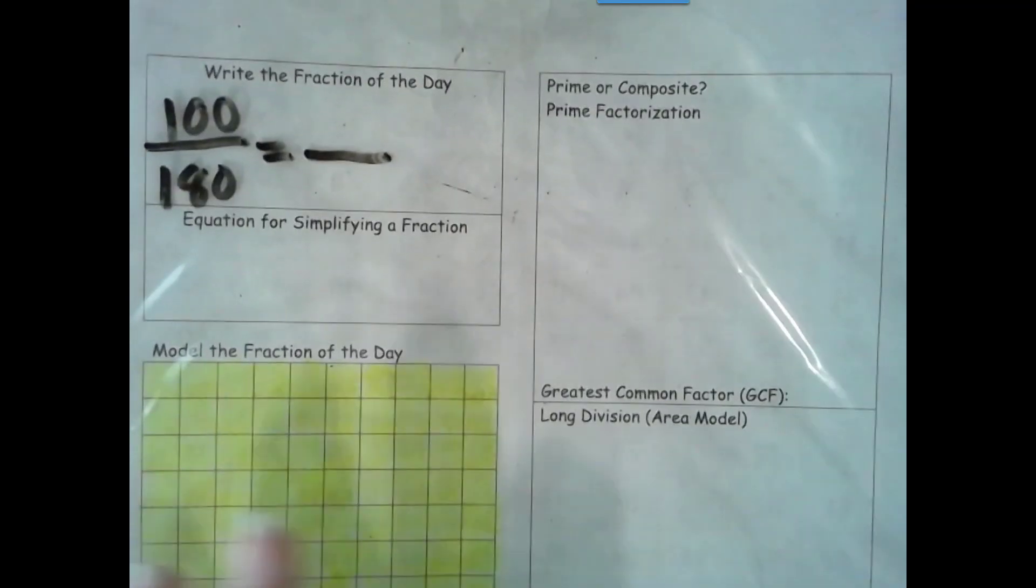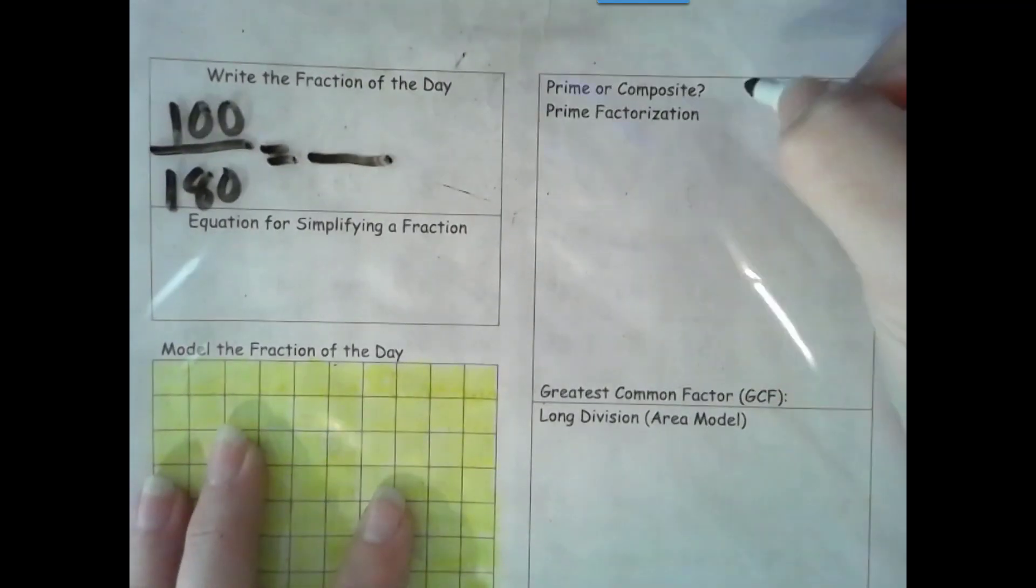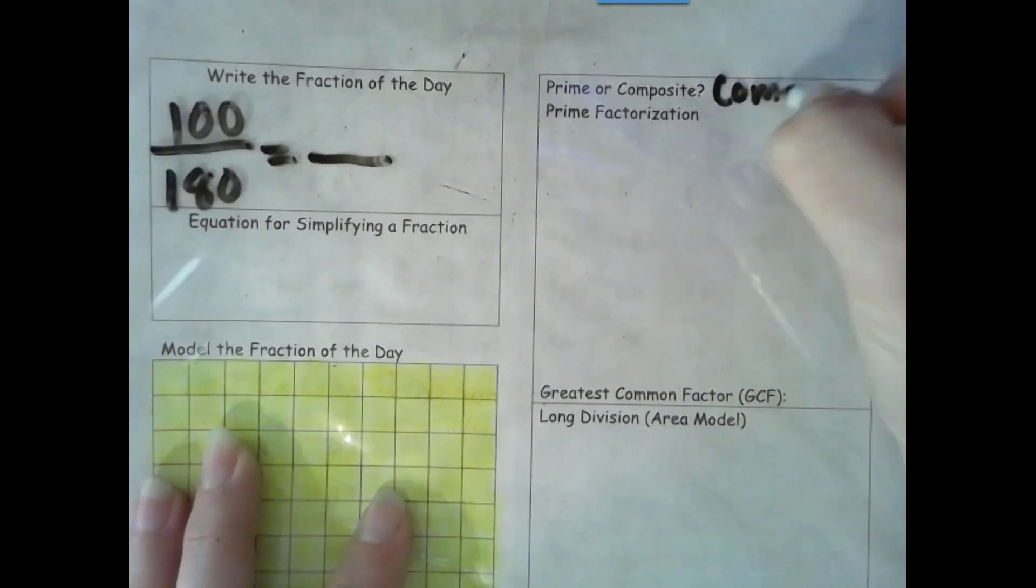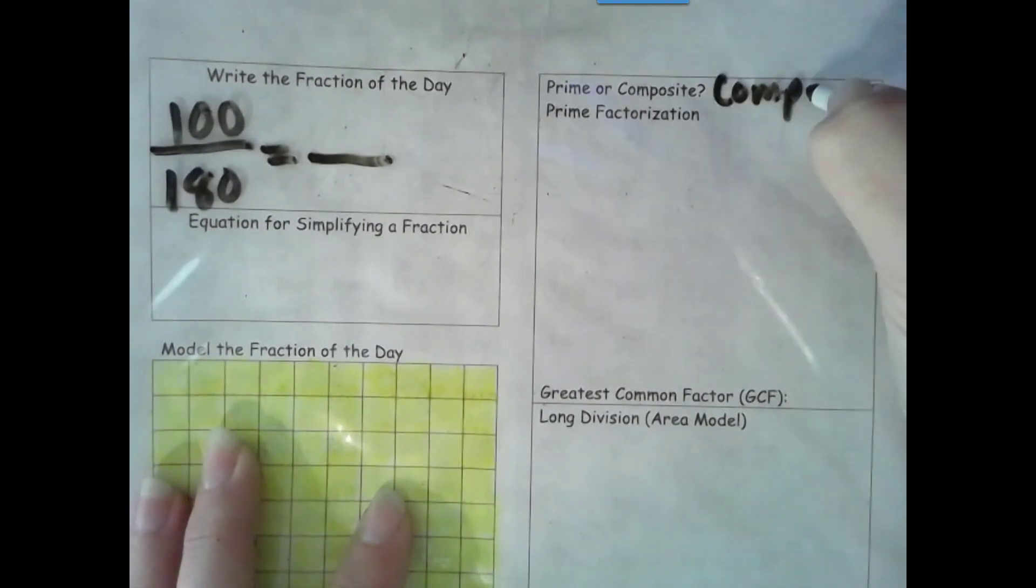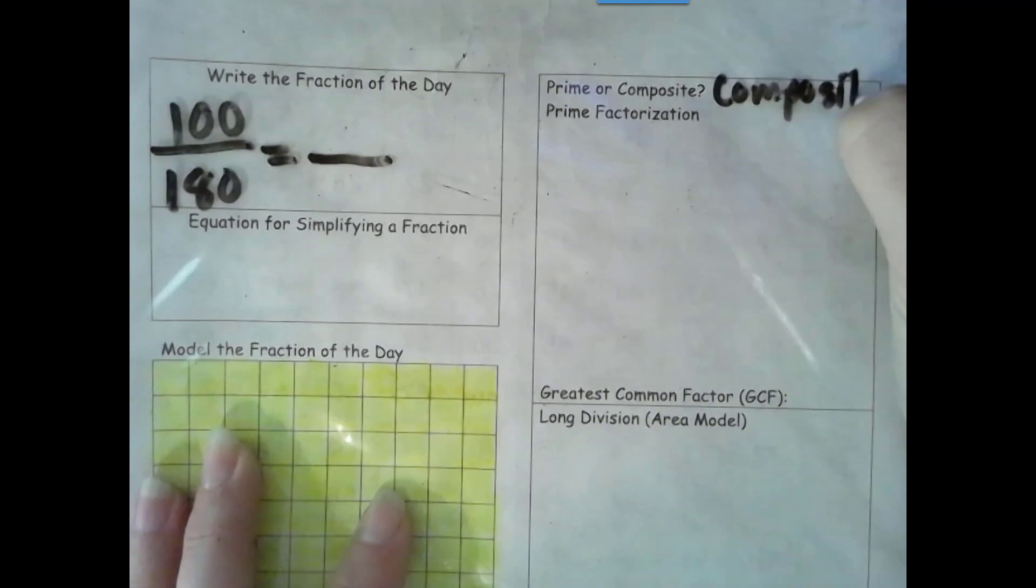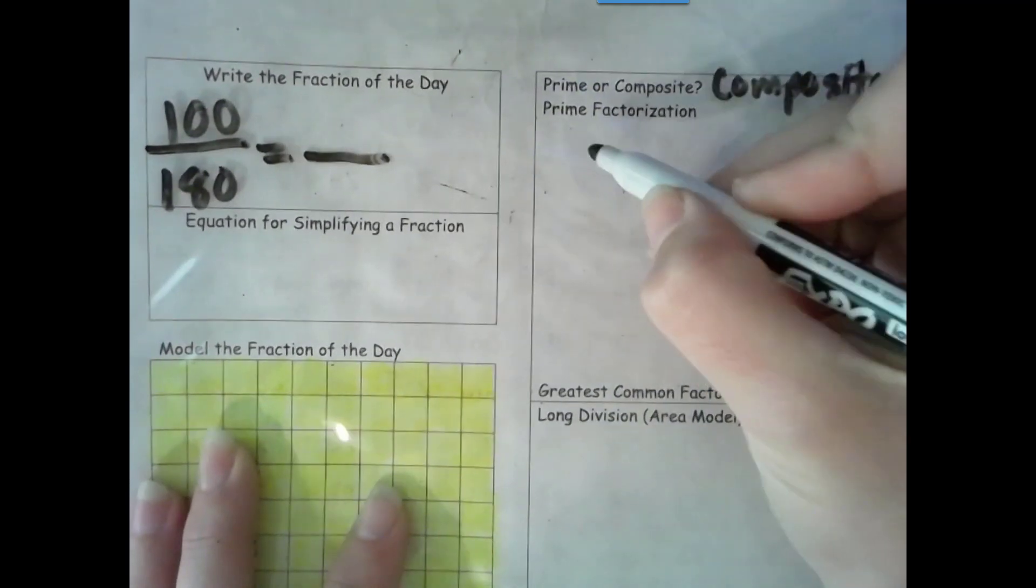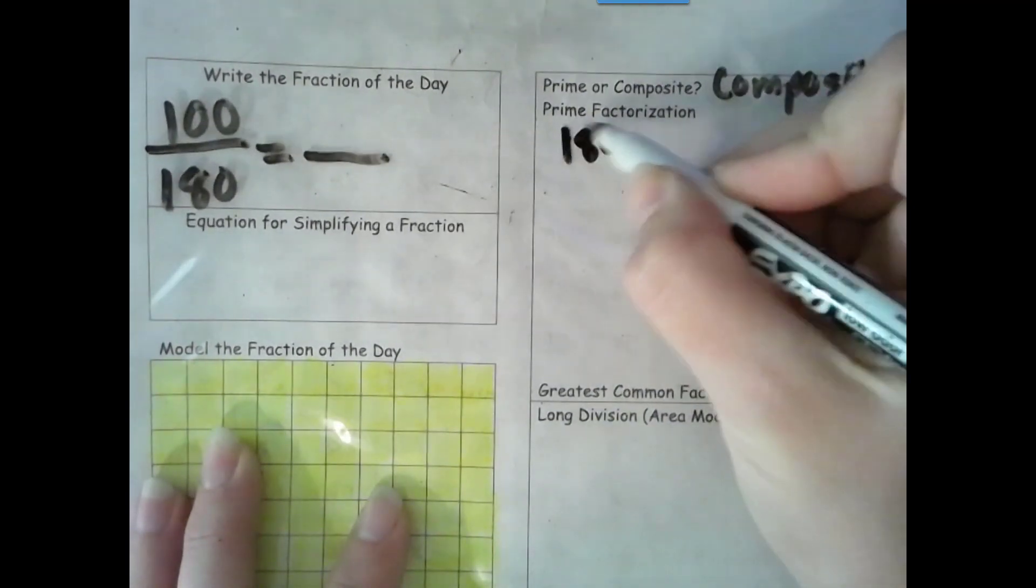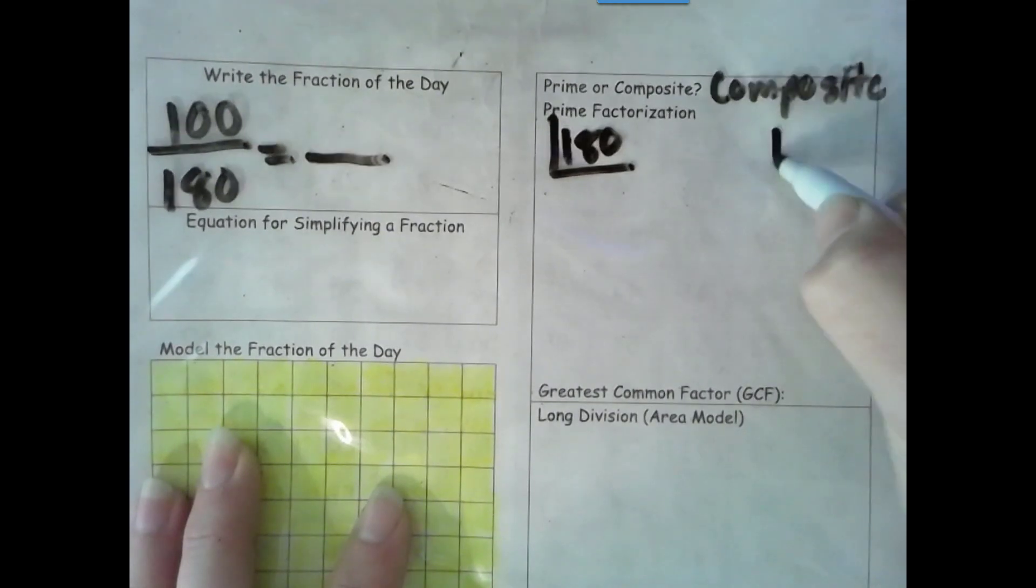Now 100, that is even, so it is composite because the only even number that's prime is 2. That means we need to do the prime factorization for both our denominator and our numerator.